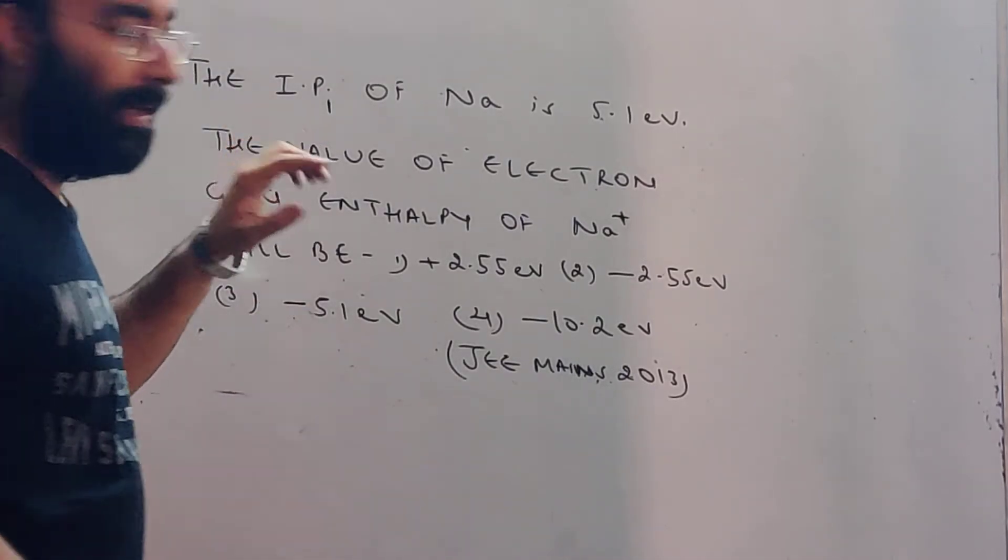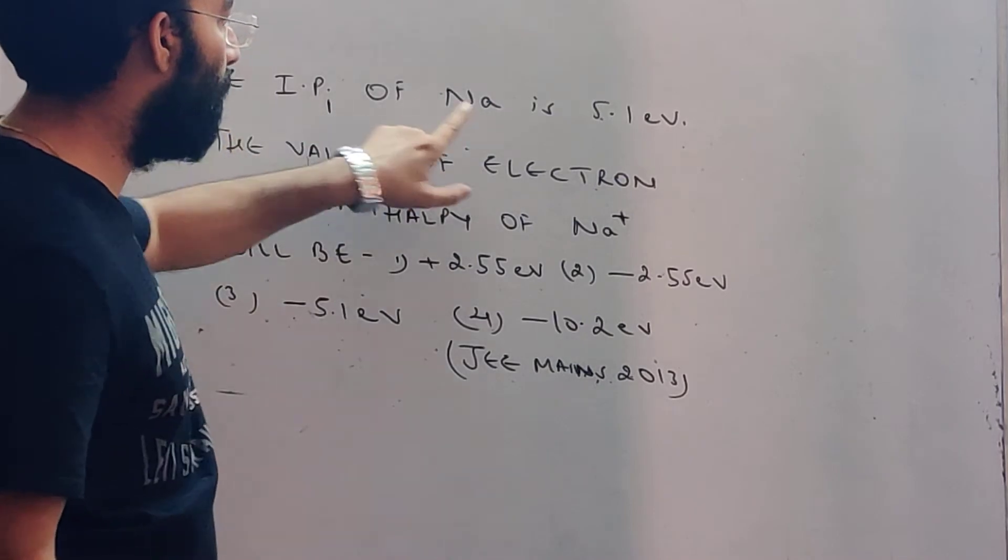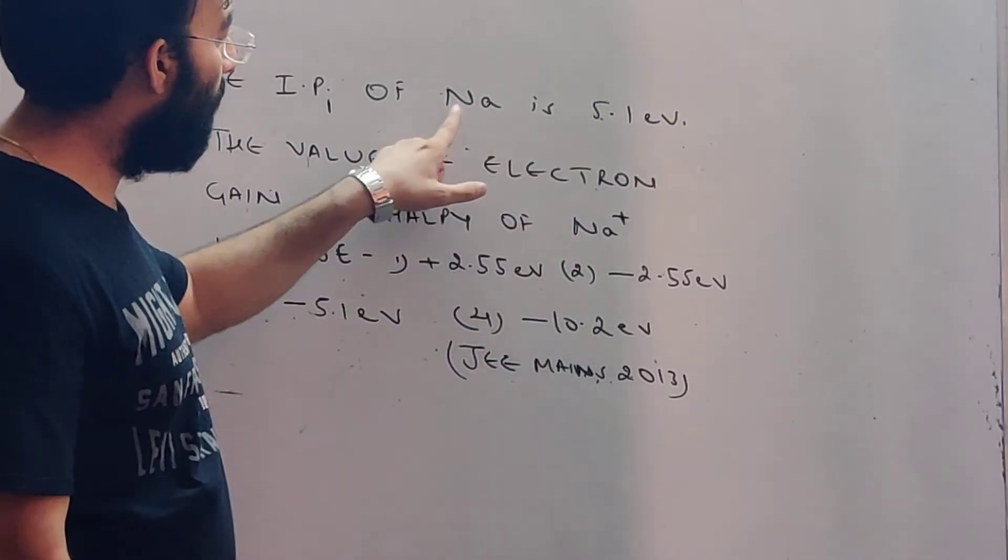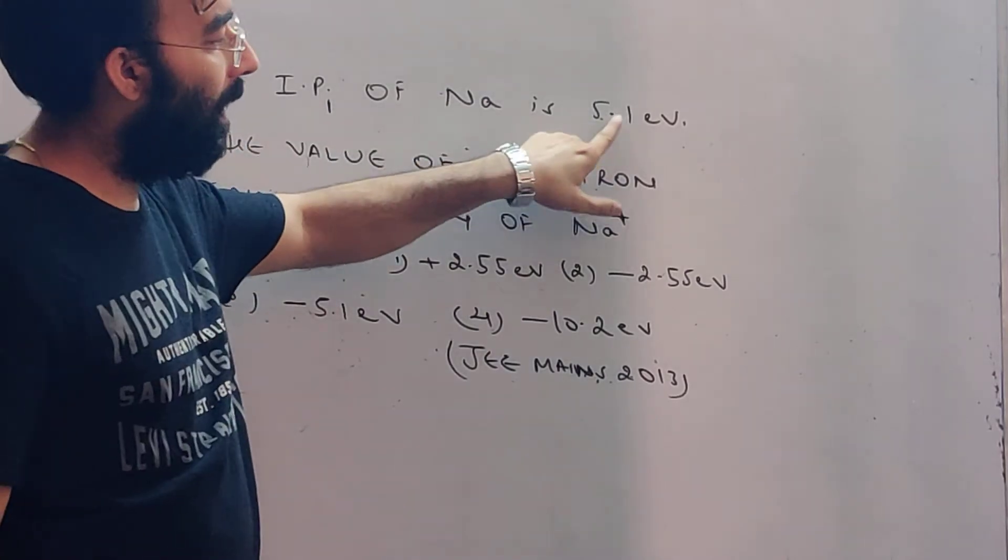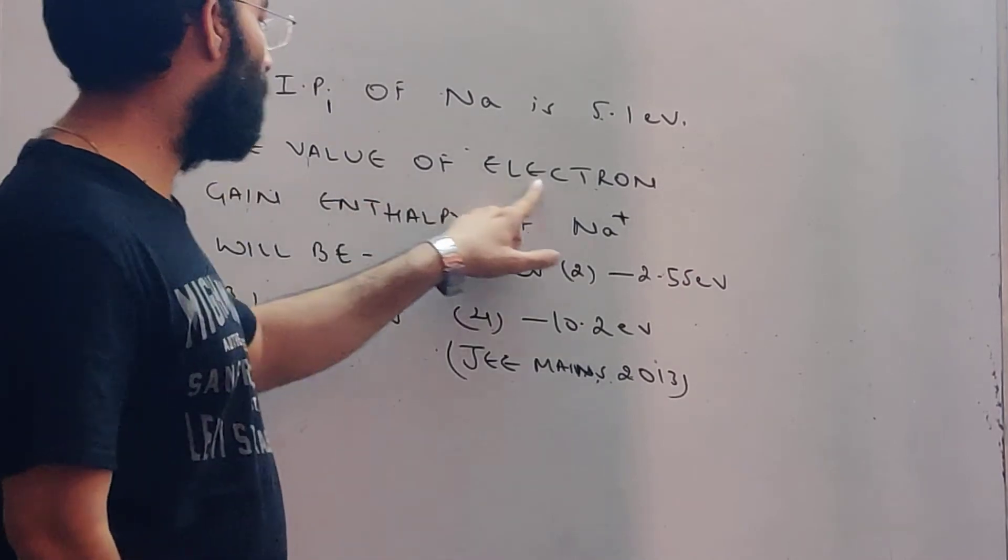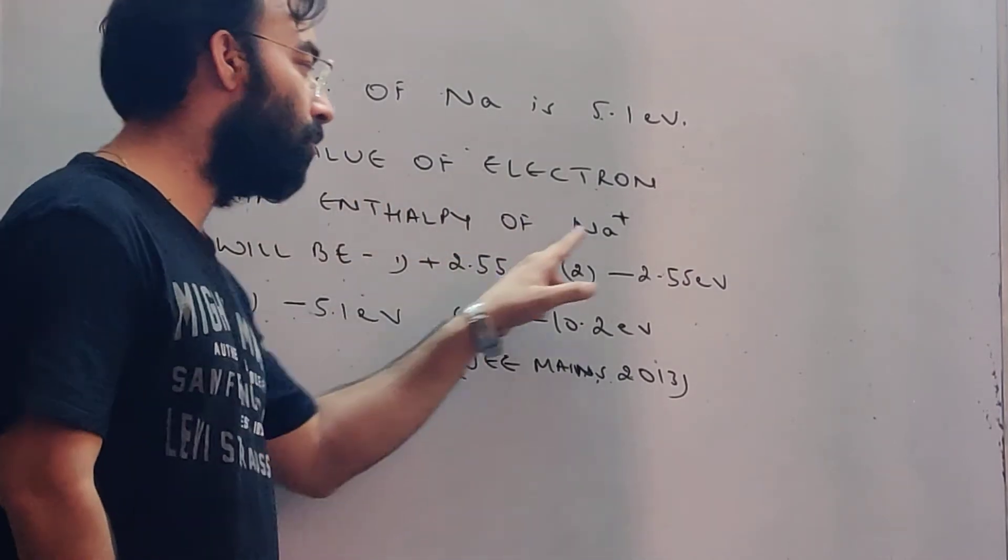Now what is the question? The first ionization potential of sodium is 5.1 electron volts. This means the first ionization potential is 5.1 electron volts. And asked the value of electron gain enthalpy of sodium ion.